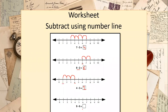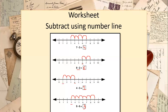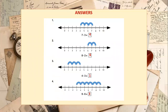Last question: 9 minus 6. We start from 9 and move backward 6 steps: 1, 2, 3, 4, 5, 6. We land on number 3. So 9 minus 6 equals 3. This is how we solve questions using number lines, doing subtraction by moving backward.